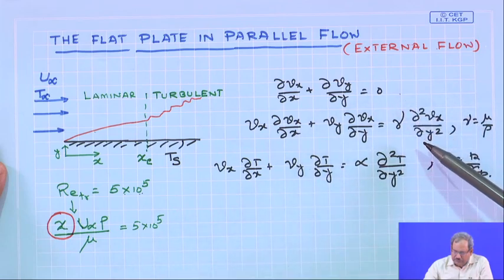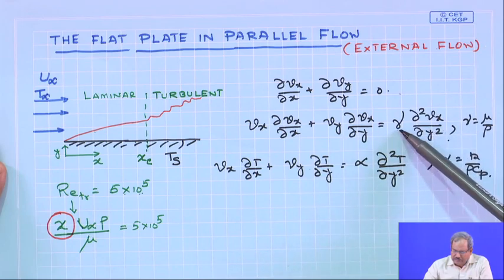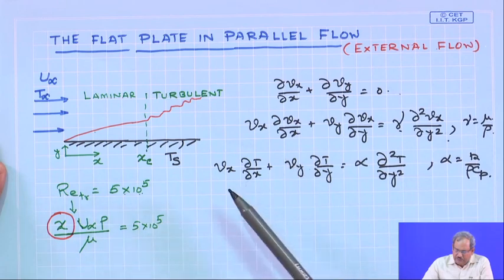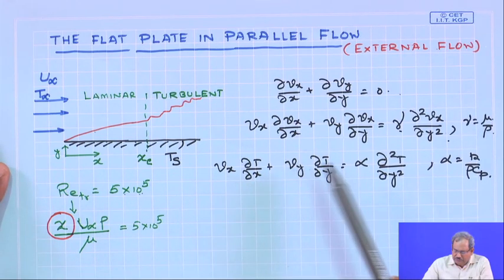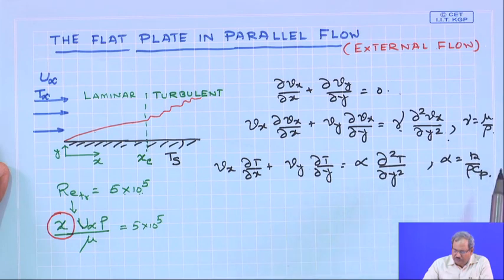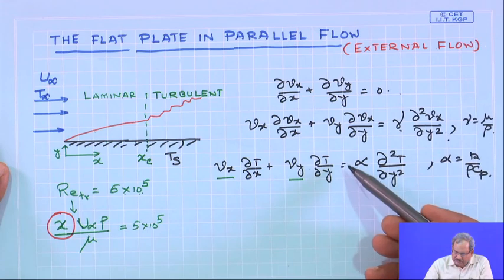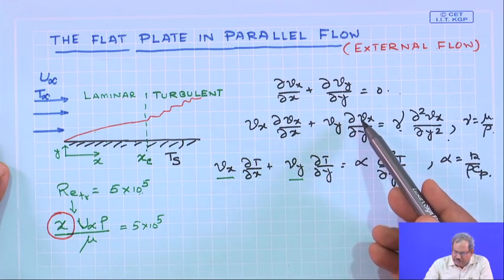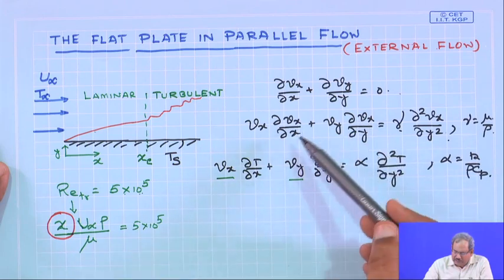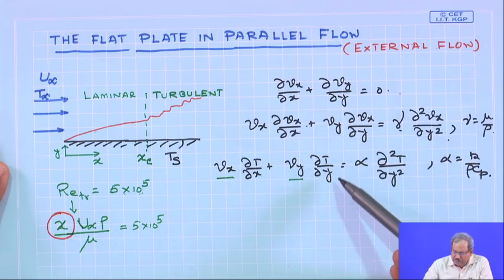These are the three equations derived using boundary layer approximations: the equation of continuity, the x-component equation of motion (with kinematic viscosity ν = μ/ρ), and the energy equation using boundary layer approximations (where α is thermal diffusivity = k/ρcp). The presence of vx and vy in the energy equation makes it coupled with the x-component momentum equation.